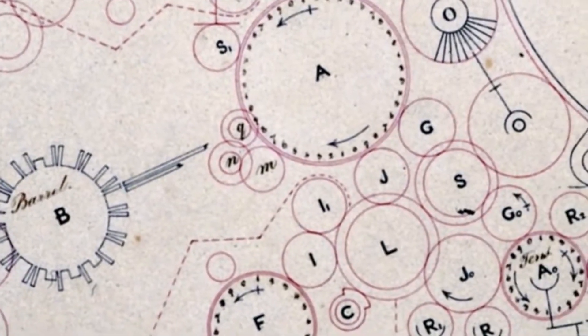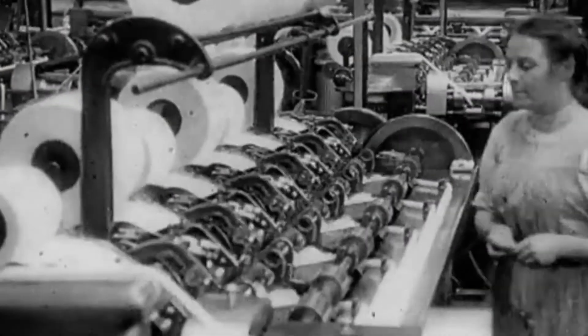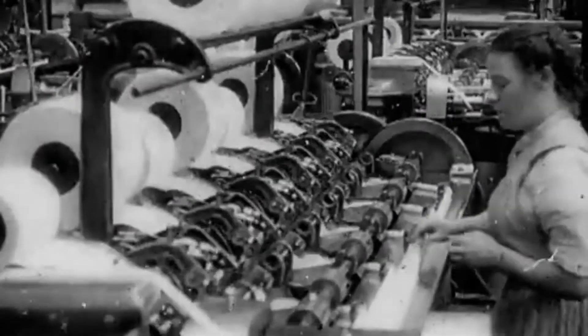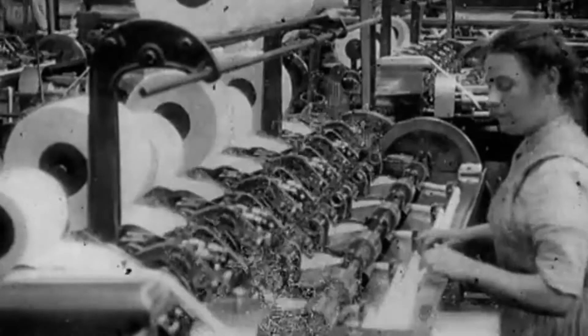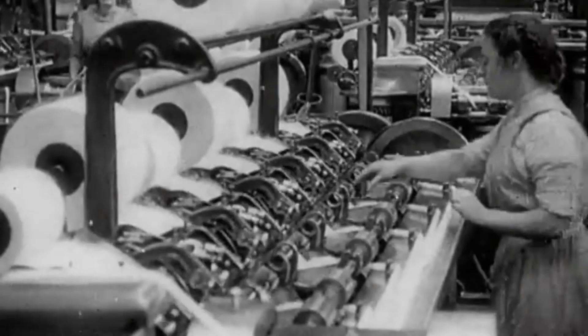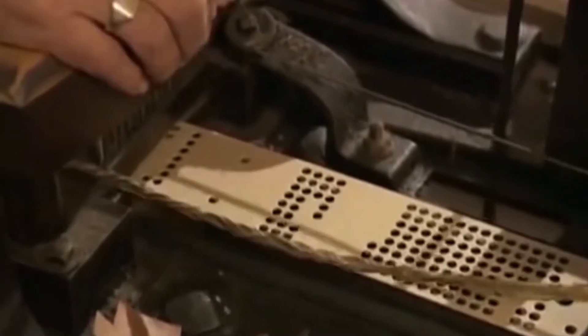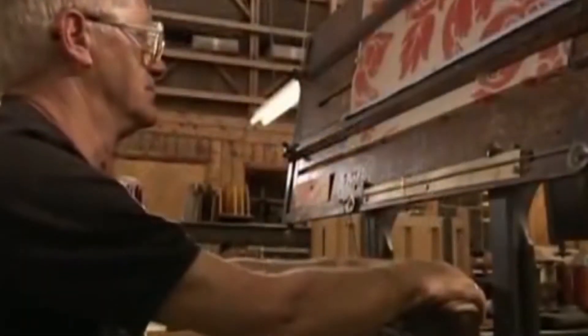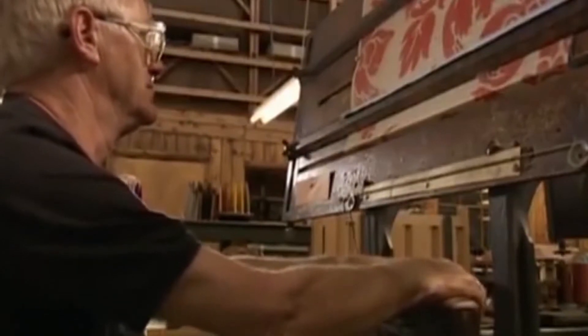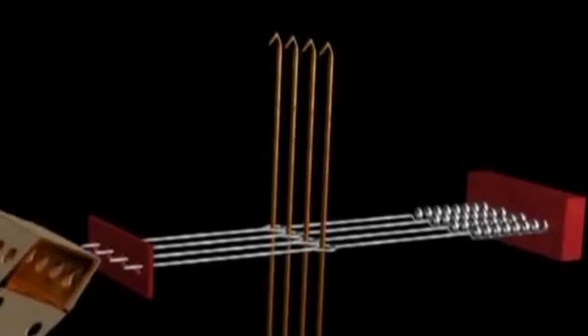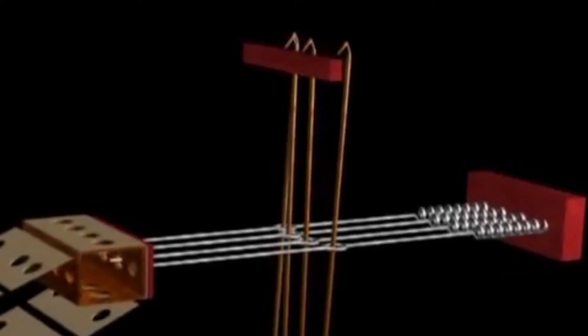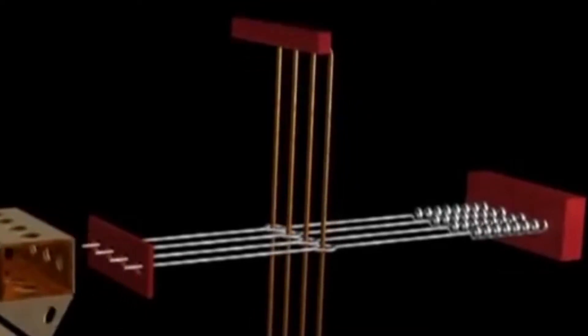After looking at the plans of the Analytical Engine, Ada eagerly went to the cotton mills of North England to study the Jacquard Loom, the most advanced machine at the time, which was also controlled by a series of punch cards. What she was interested in was knowing how complicated patterns were translated into something simple that the machine could understand. She later wrote: 'The Analytical Engine weaves algebraic patterns just as the Jacquard Loom weaves flowers and leaves.'